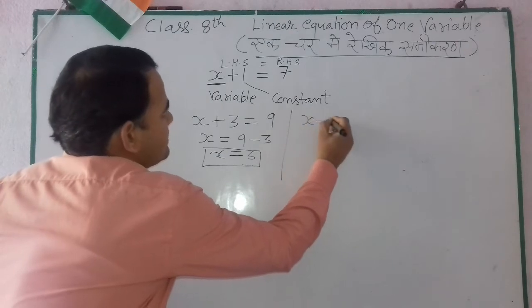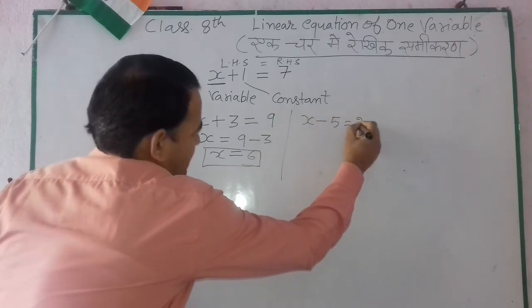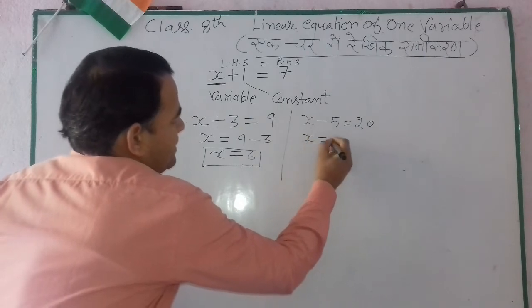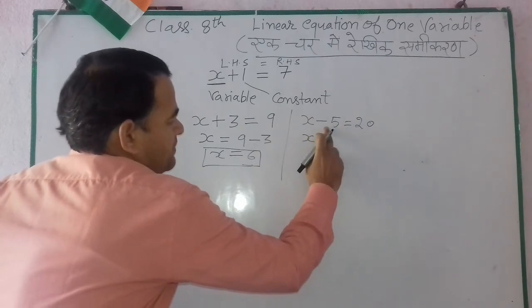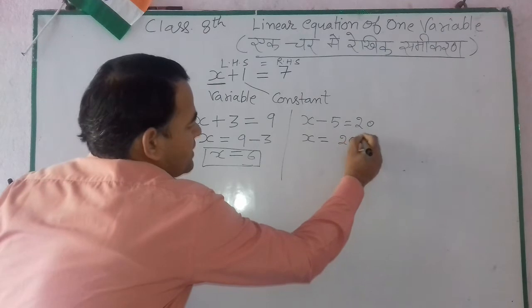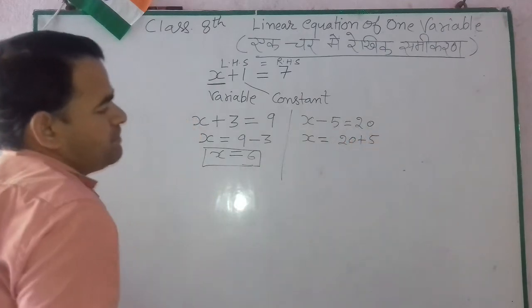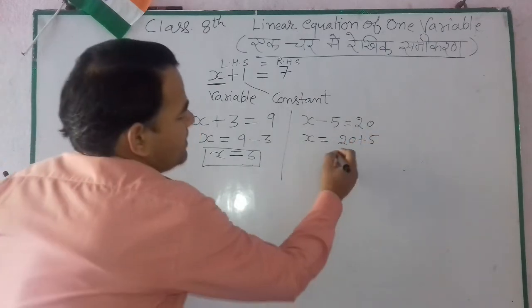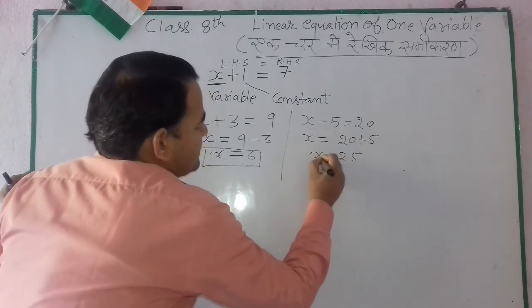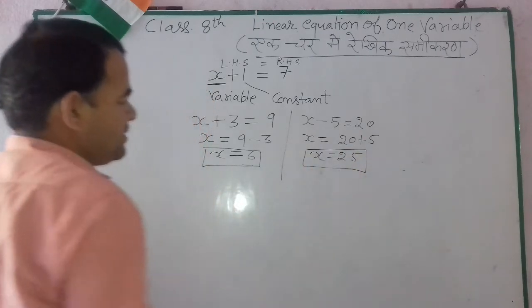Another example: if x minus 5 is equal to 20, then x's value is equal to 20 plus 5, which is 25.